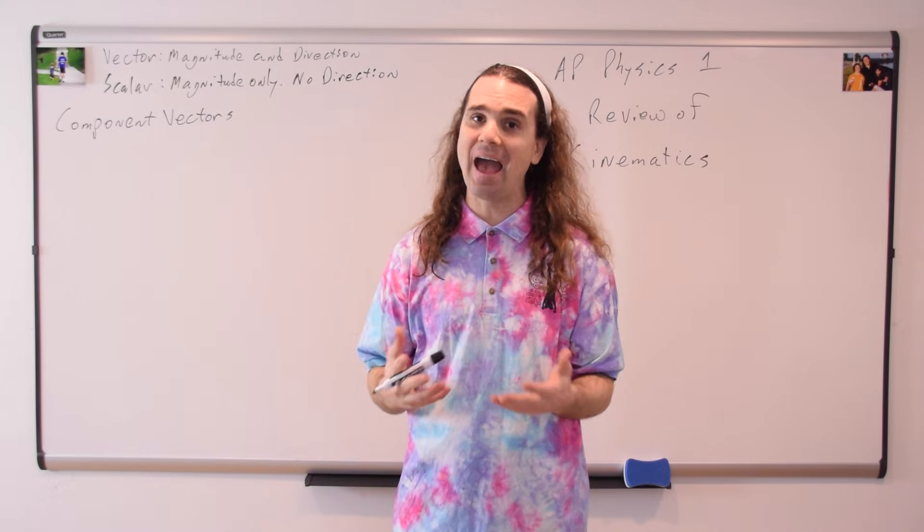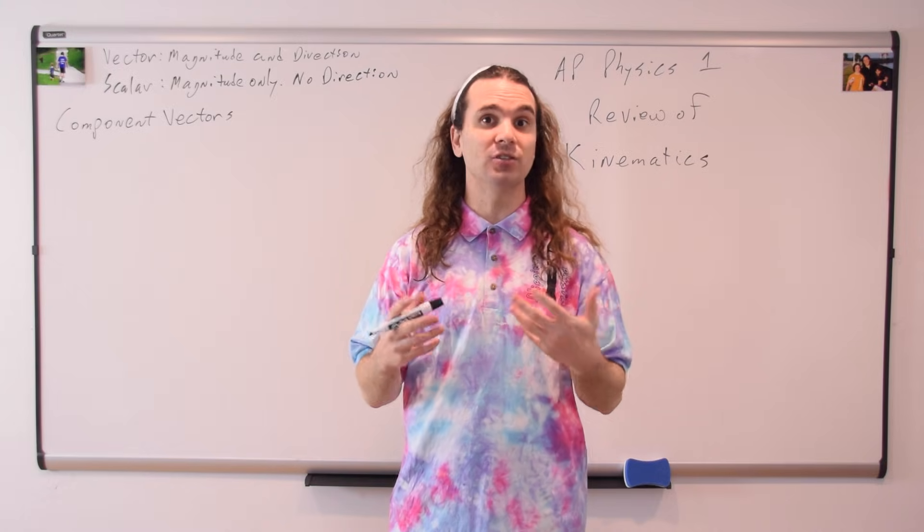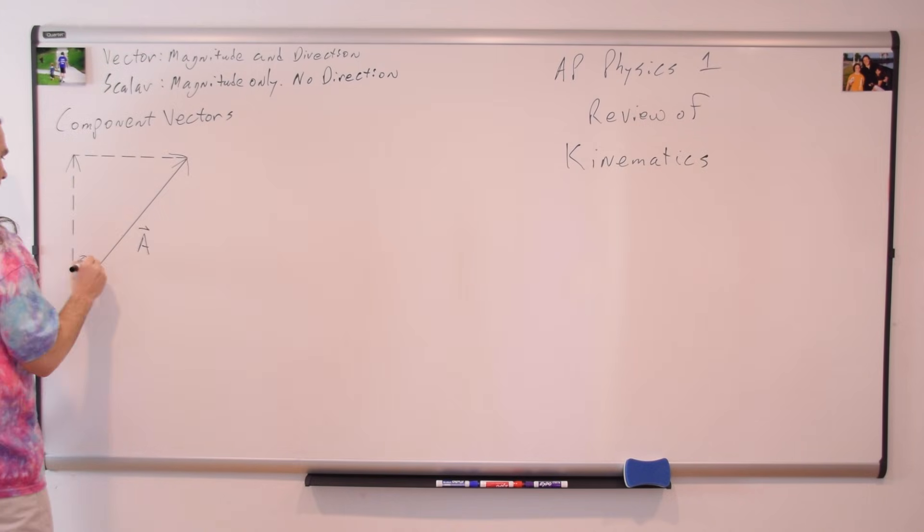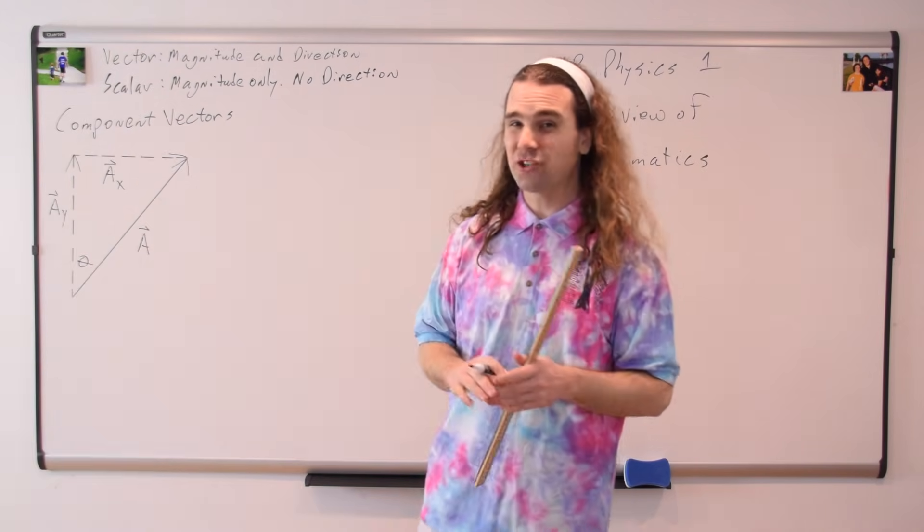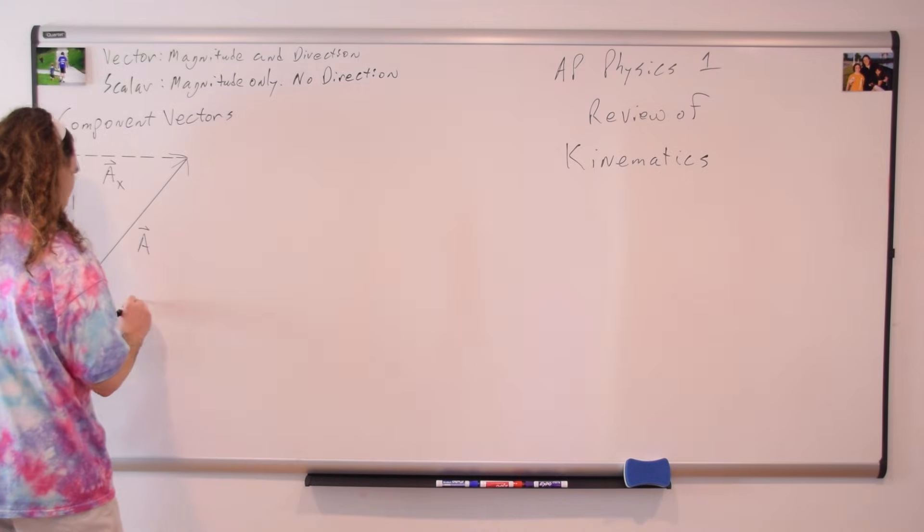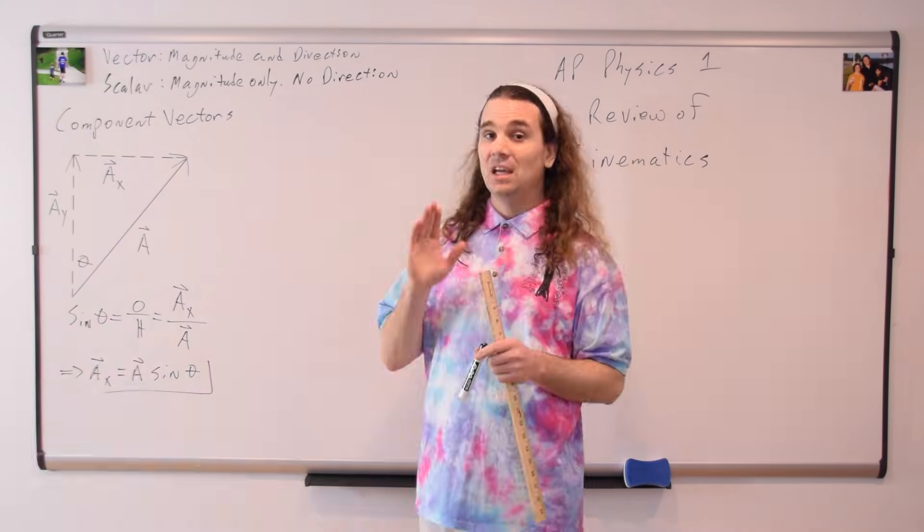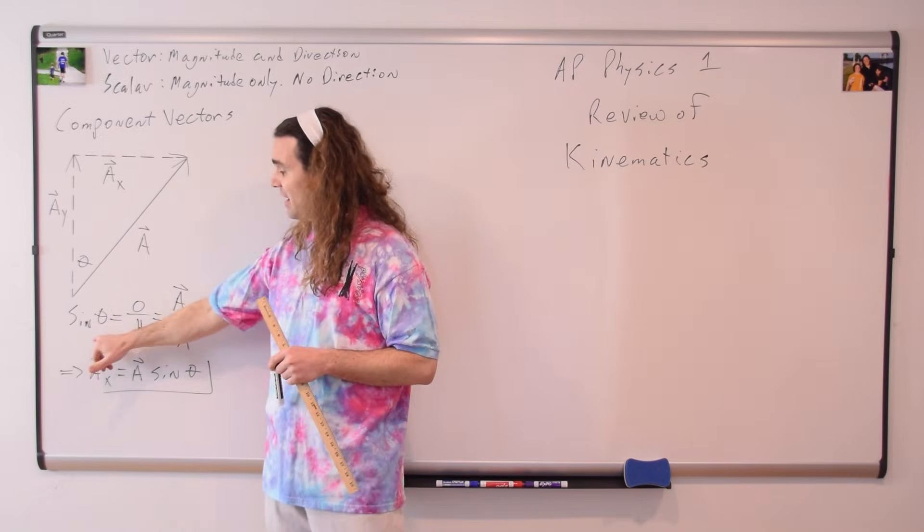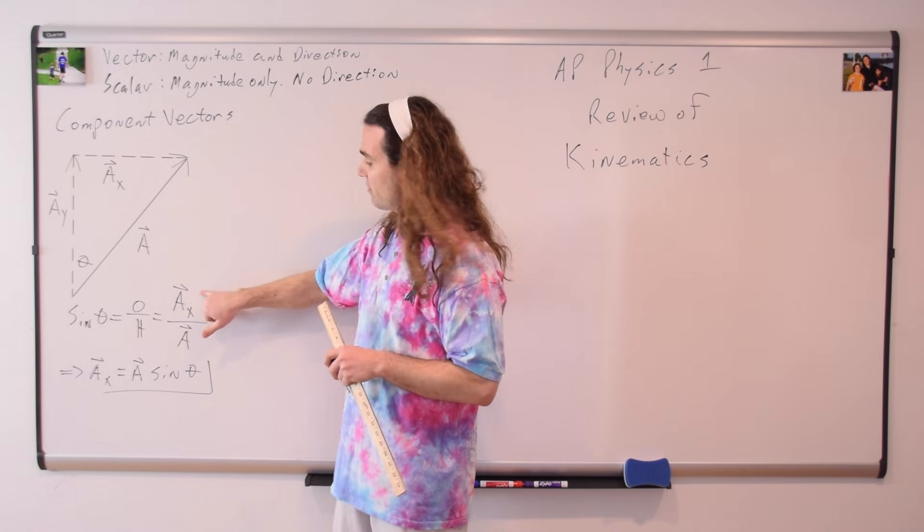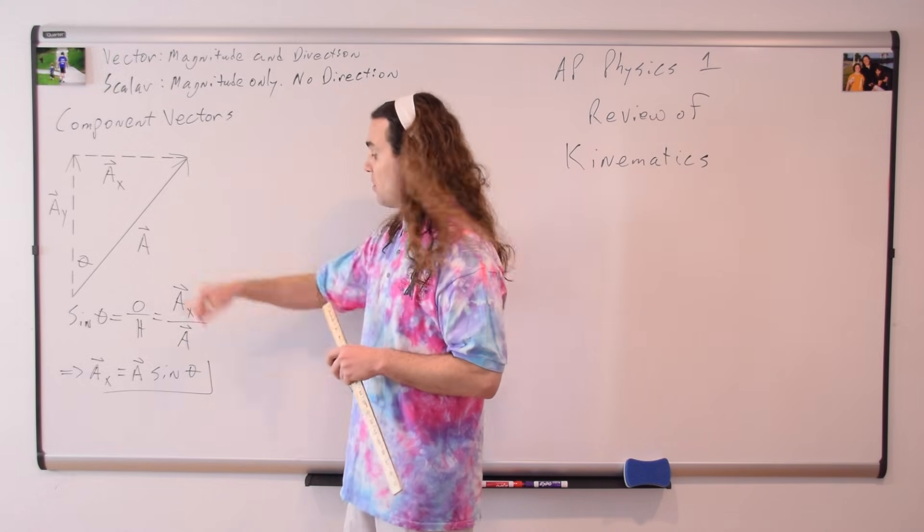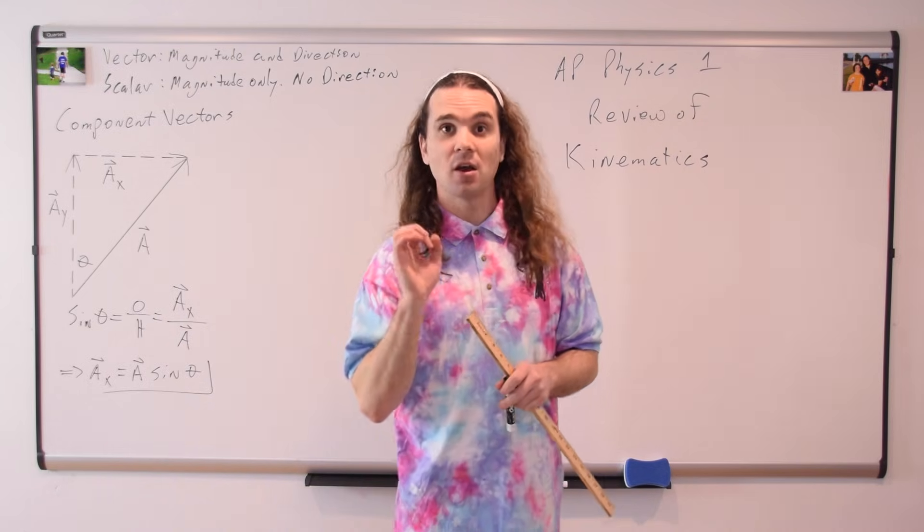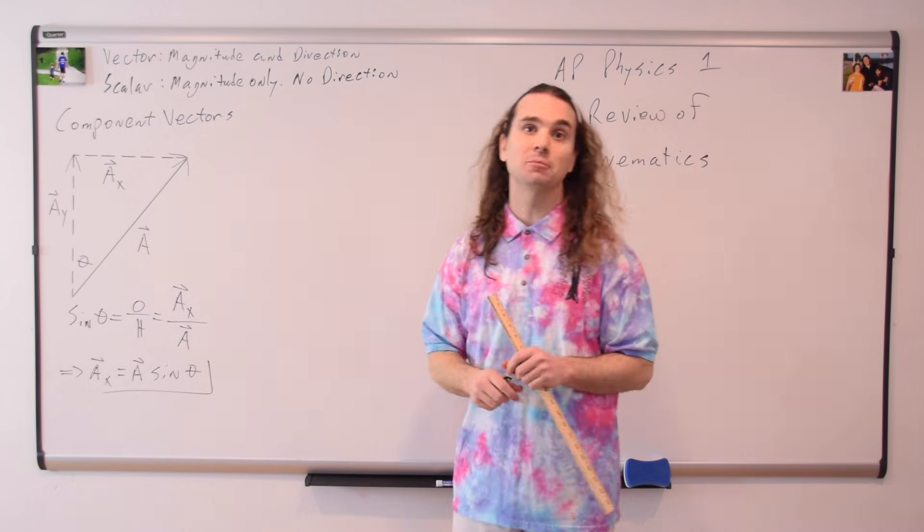Speaking of vectors, you have to remember to break or resolve vectors into their components. And remember that your angle theta won't always be with the horizontal. If theta is with respect to the vertical, then the sine of theta, which equals opposite over hypotenuse, is then equal to the vector a in the x direction divided by vector a. Multiplying by a, we get the vector a in the x direction equals a times the sine of theta. Not the cosine, but the sine of theta, so please be careful of that.